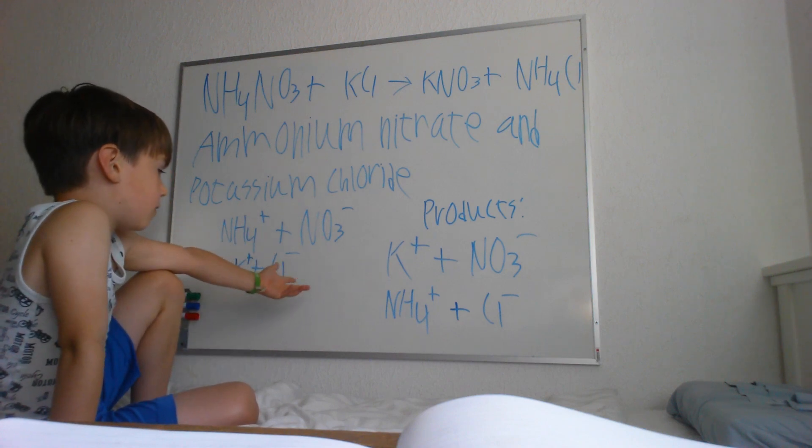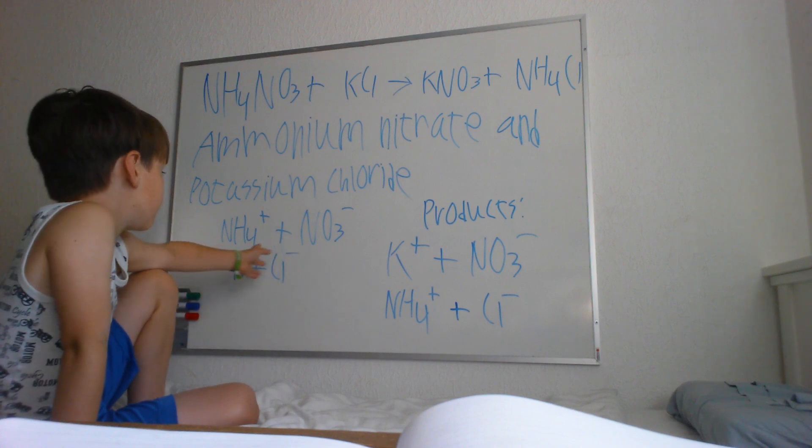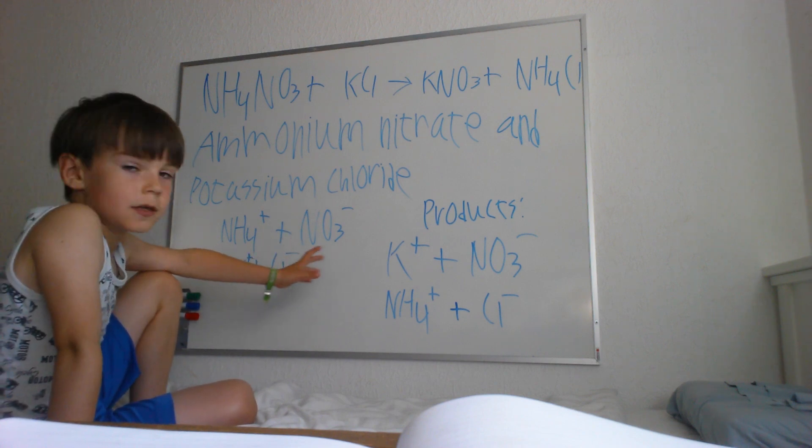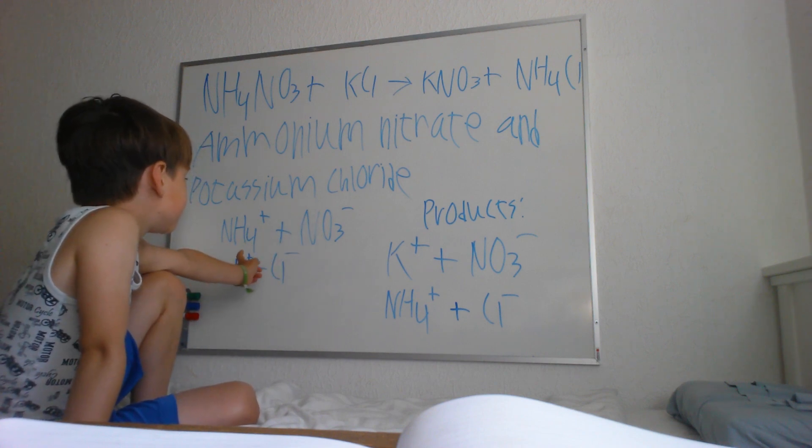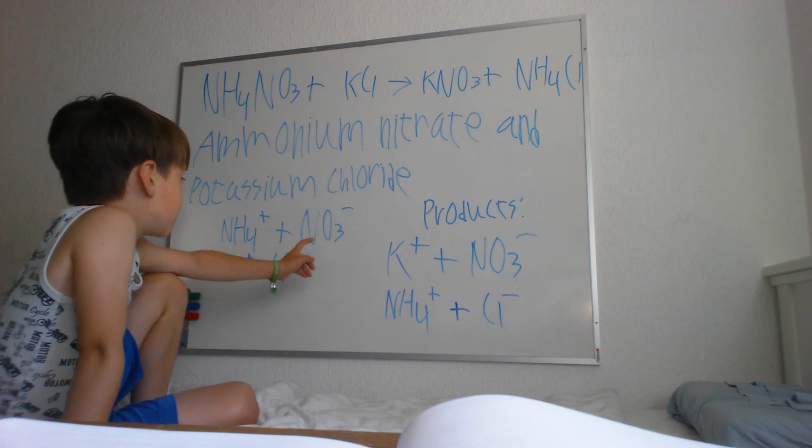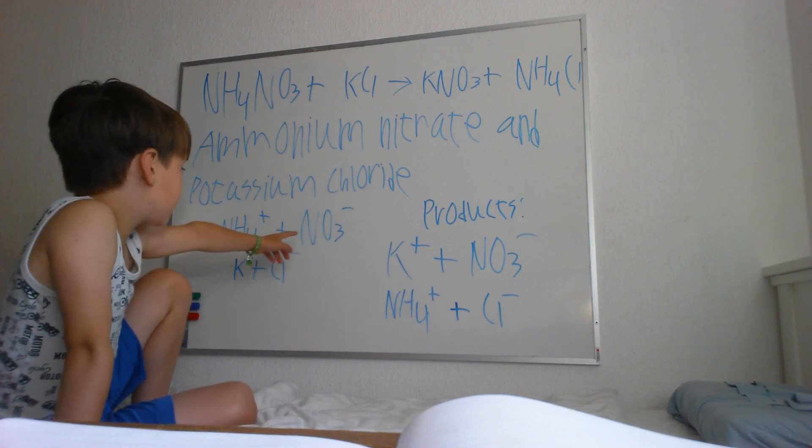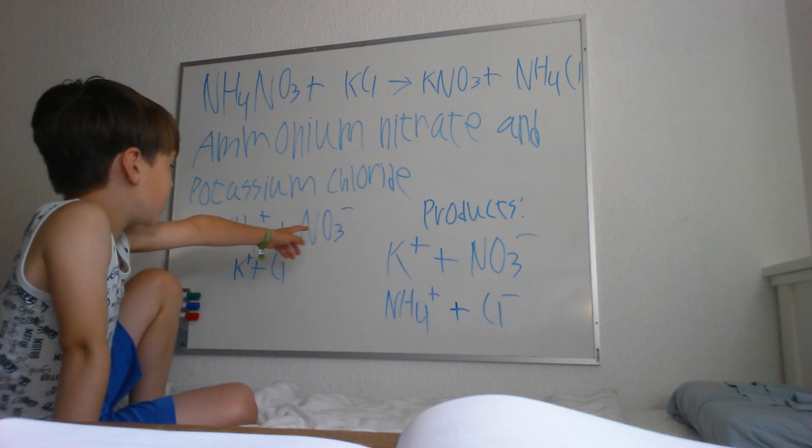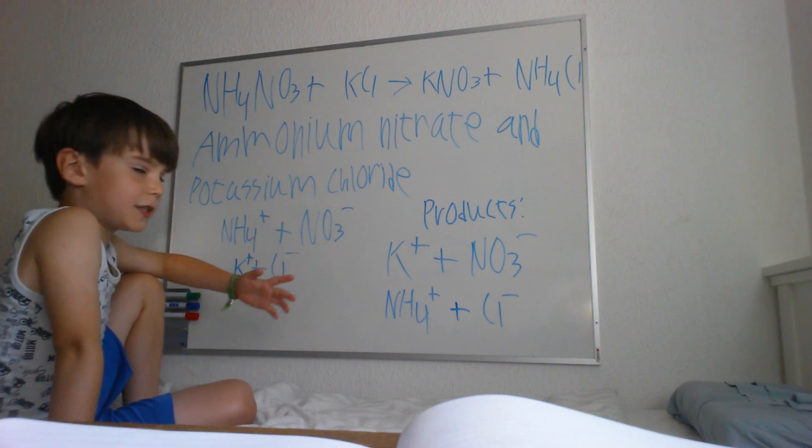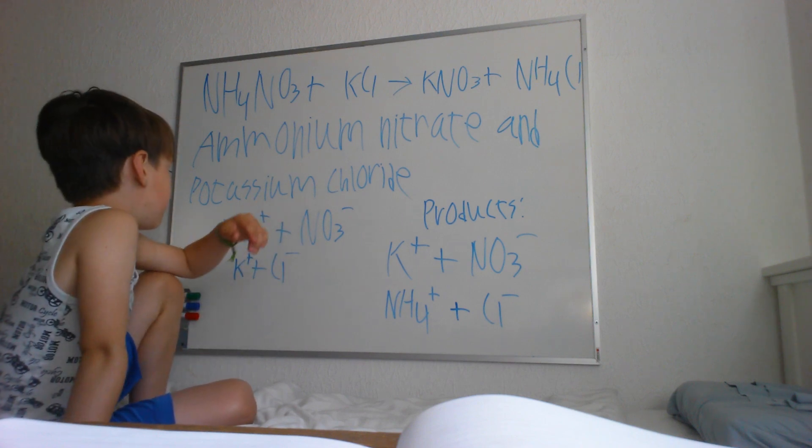That's actually just how it bonds when you have a plus and a minus. The plus is missing one electron, and here with the ammonium nitrate, the nitrate can give the ammonium one free electron, so it can complete its outer ring.